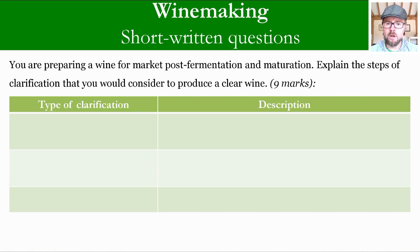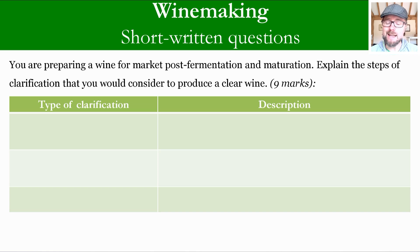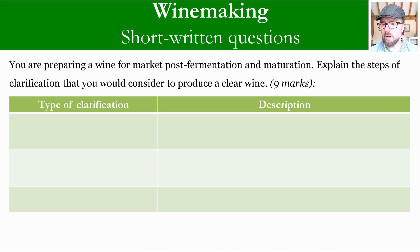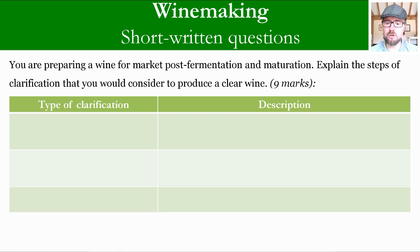We are preparing a wine for market post-fermentation and maturation. We have fermented the wine, we have matured it, and now we are preparing it for its market — basically up to bottling. The question is: please explain the steps of clarification that you would consider to produce a clear wine. There are many things a winemaker can do here. You'll see we've got nine marks available, so you get one mark for each clarification. There are three to name and three descriptions. It's a good idea to pause and answer as best you can before I go through these.